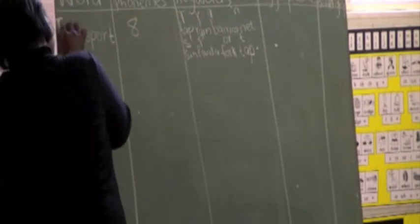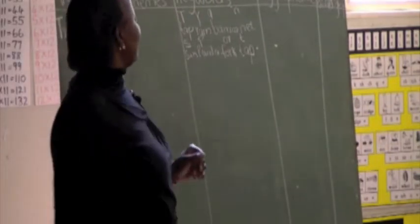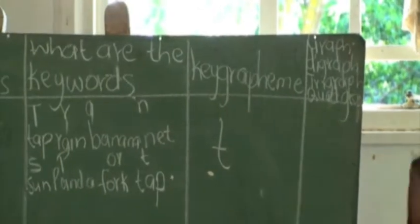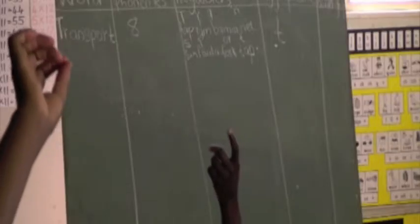And then here, our key grapheme is this. Is it a graph, a digraph, a trigraph, or a quad graph? It's a graph. Why do we say it's a graph? Because it's one letter, which is the letter T, and it makes one sound, which is the T sound. Therefore it is a graph.